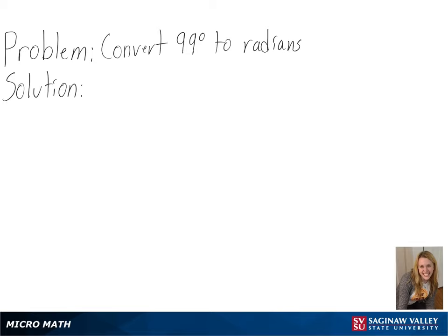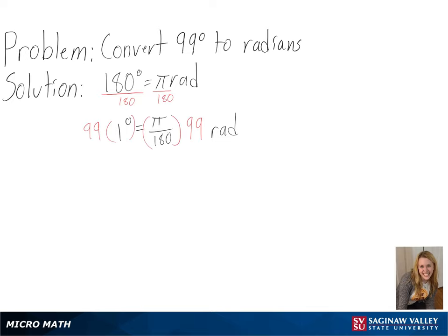Our problem is to convert 99 degrees into radians. To start out, we know that 180 degrees is equal to pi radians. So we can divide each side by 180 to know the amount of radians in one degree. And then we can multiply both sides by 99 to convert to 99 degrees.